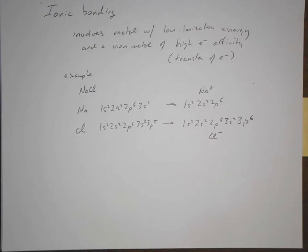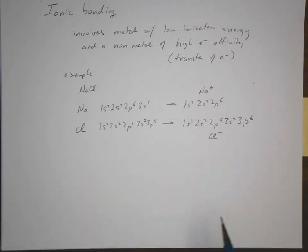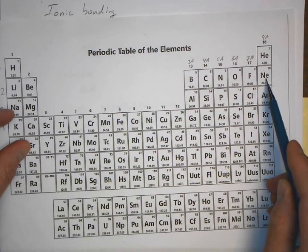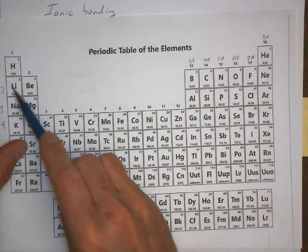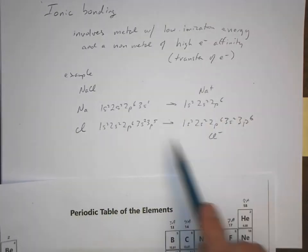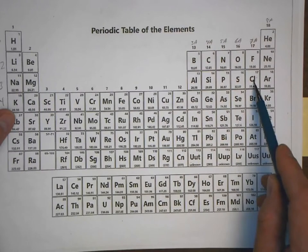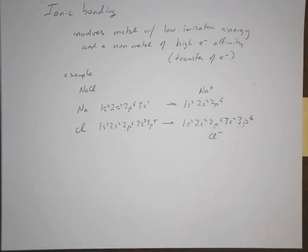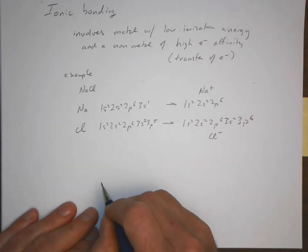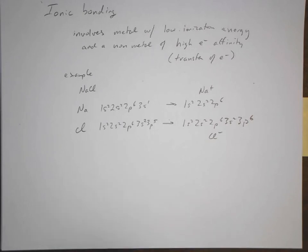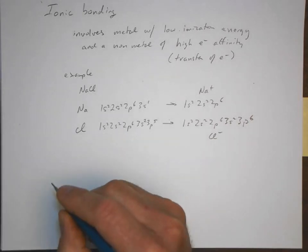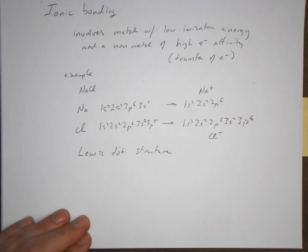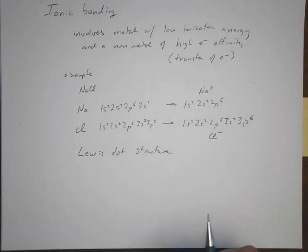This gives us the electronic configuration of Na⁺ and Cl⁻. Both of these now have a noble gas configuration. Sodium loses one electron and becomes isoelectronic with neon (2s² 2p⁶). Chlorine gains one electron and becomes isoelectronic with argon. We have Na⁺ and Cl⁻. Rather than writing out these electron formulas all the time, I'm going to introduce the idea of a Lewis dot structure.